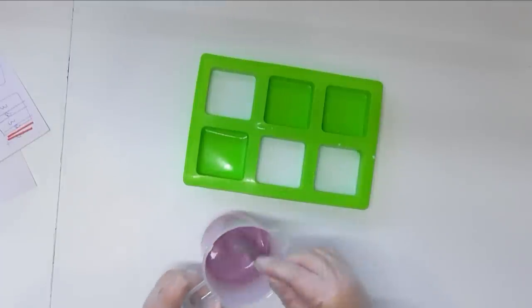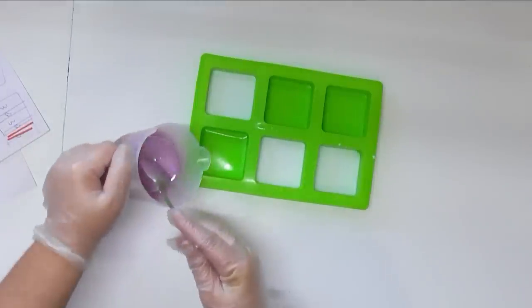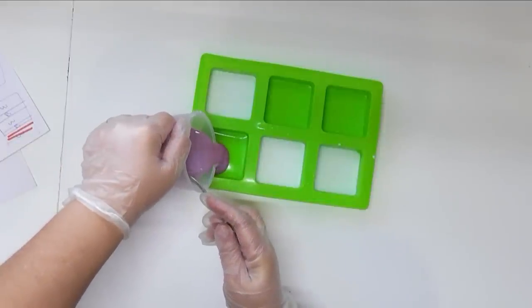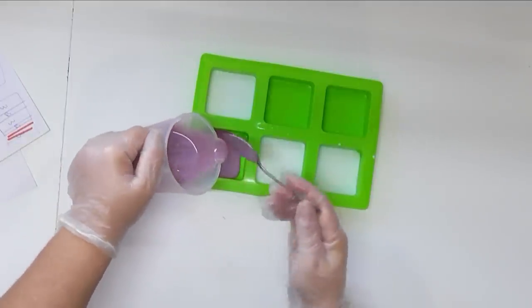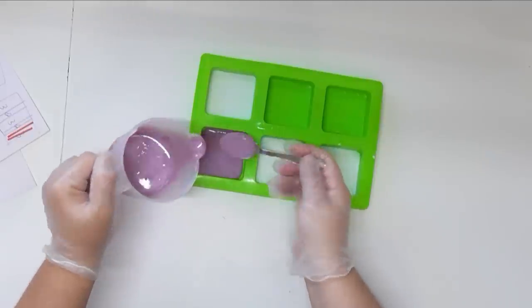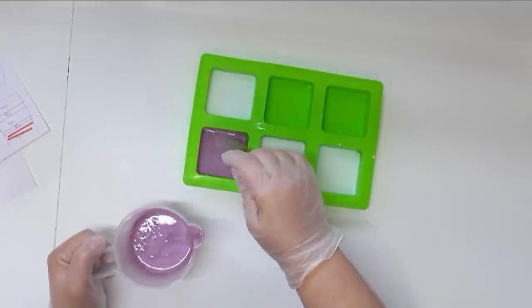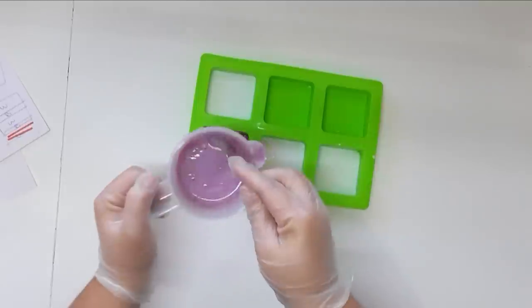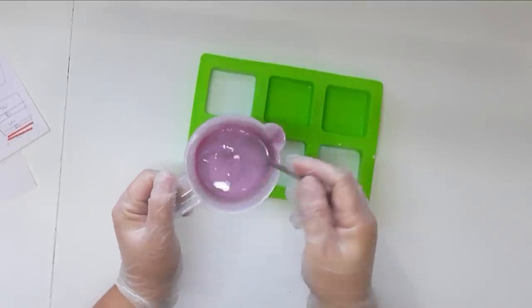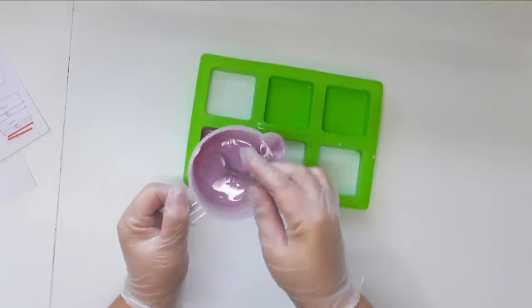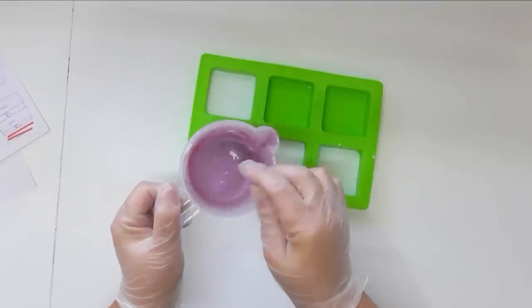Now what I'm doing in between each of these pours - I have a jug or a pot over on my stove that has some warm water in it, and I'm popping these jugs back into the warm water so that this melt and pour stays fluid. I don't have to keep reheating it in between, so I don't actually damage the integrity of the melt and pour.